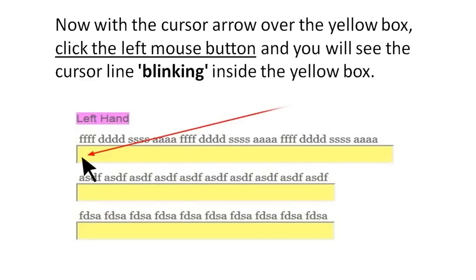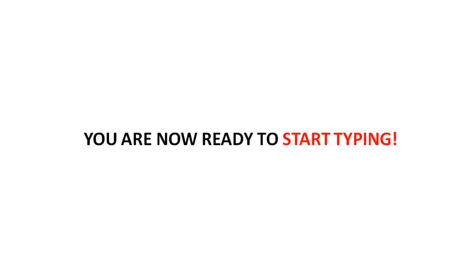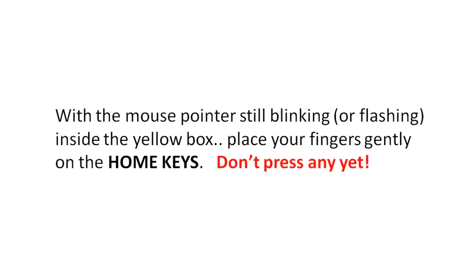With the cursor arrow over the yellow box, click the left mouse button and you'll see the cursor line blinking inside the yellow box. You are now ready to start typing. With the mouse pointer still blinking inside the yellow box, place your fingers gently on the home keys — don't press any yet.